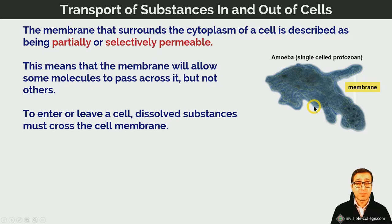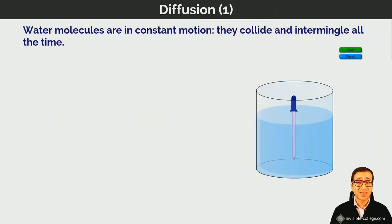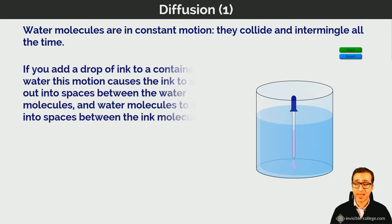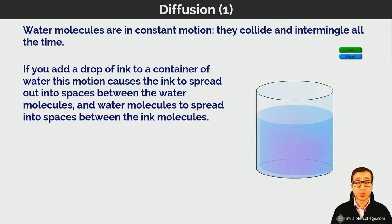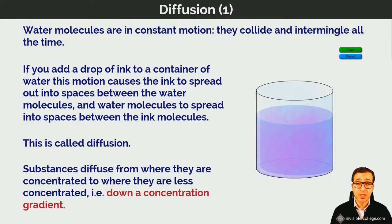There are three main mechanisms by which substances can move through the membrane: diffusion, osmosis, and active transport. Starting with diffusion — water molecules are in constant motion and will collide and intermingle. If we take a beaker of water and add a drop of ink, the ink slowly spreads through the water due to collisions between the moving water molecules and the ink molecules, causing the ink molecules to move randomly from high concentration to low concentration until evenly distributed. This process is called diffusion.